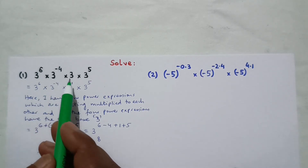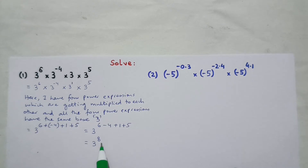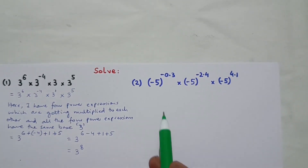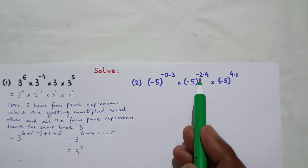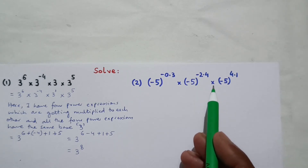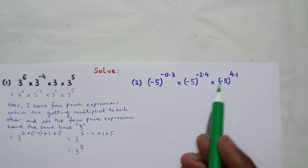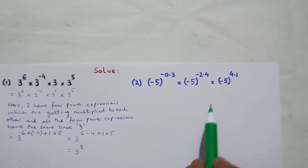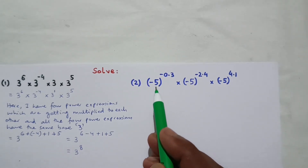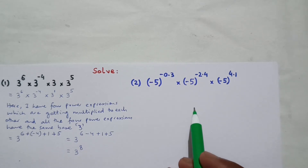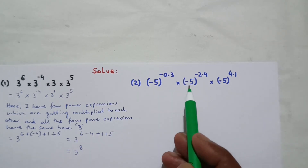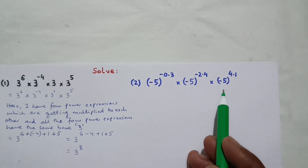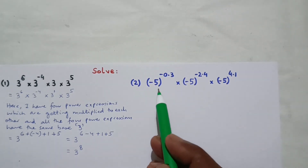So 3 to the power 6 into 3 to the power minus 4 into 3 into 3 to the power 5 equals 3 to the power 8. Now let us go to question number 2: minus 5 to the power minus 0.3, multiplied to minus 5 to the power minus 2.4, multiplied to minus 5 to the power 4.1. We have to simplify this expression. Here we have three power expressions getting multiplied to each other, all with the same base minus 5.